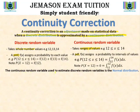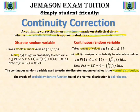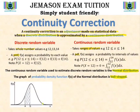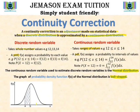The continuous random variable used to estimate discrete random variables is the normal distribution. The graph of the probability density function f(x) of the normal distribution is bell-shaped. The total area enclosed by the whole graph and the x-axis equals 1. To find the probability that x lies between a and b, we find the shaded area enclosed by the probability density function, the x-axis, and the vertical lines at a and b. Whether the boundaries are included or not, that area will not change.